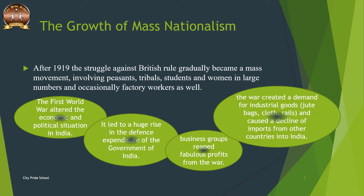In the previous sessions we discussed that different groups of people in India — like peasants, sepoys, zamindars, and kings — were unhappy with British rule because of their policies. Now, after 1919, the struggle against British rule became a mass movement, which involved students, tribals, and women in large numbers and occasionally factory workers as well. Even some business groups actively supported the Congress in the 1920s.